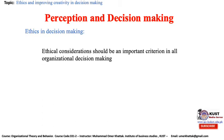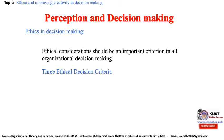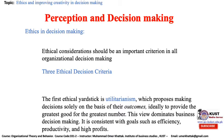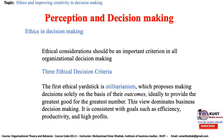Ethical consideration should be an important criterion in all organizational decision-making. The first ethical yardstick is utilitarianism, which proposes making decisions solely on the basis of their outcome — ideally to provide the greatest good for the greatest number. This view dominates business decision-making and is consistent with goals such as efficiency, productivity, and high profits.